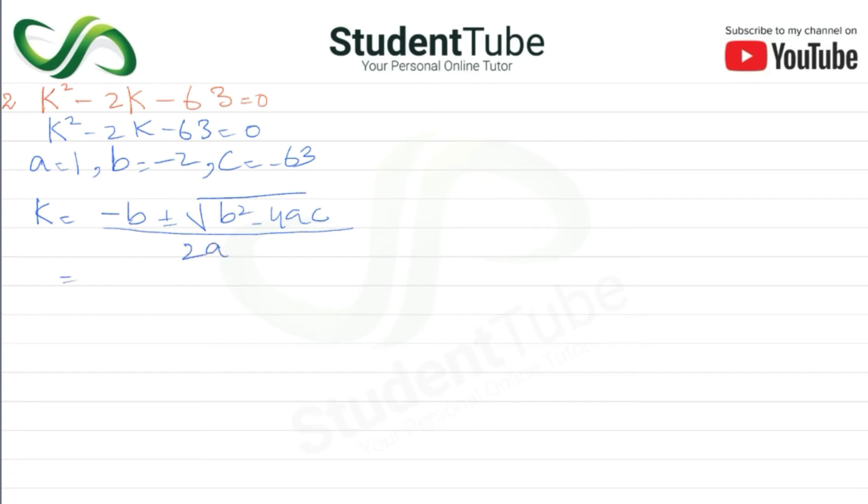Okay, so here is minus b, what is the value? Minus 2 is. Okay, plus minus, now square root: minus 2 squared minus 4 and a, and a is 63 in this square root, 2 and a.